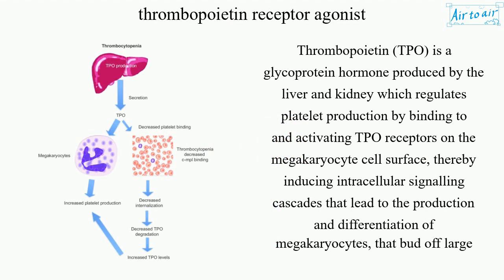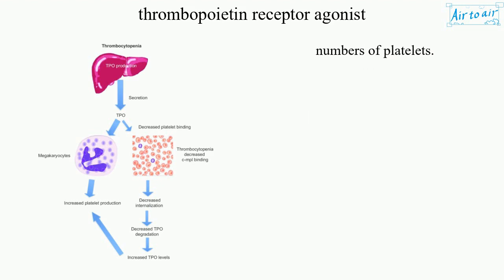Thrombopoietin (TPO) is a glycoprotein hormone produced by the liver and kidney which regulates platelet production by binding to and activating TPO receptors on the megakaryocyte cell surface, thereby inducing intracellular signaling cascades that lead to the production and differentiation of megakaryocytes that bud off large numbers of platelets.